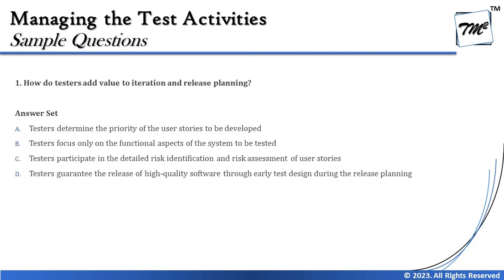As time allows, we'll be looking at some sample questions to understand how it could be difficult to answer them and how to answer them correctly within the given timeline. Picking up the very first question from Chapter 5: how do testers add value to iteration and release planning? This is one of those questions where you can identify the answer from your learning before looking at the options, thus not getting tricked by them.